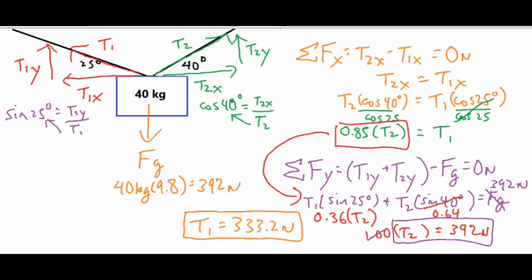To summarize: draw all forces on your diagram, break everything into x and y components, and write the sum of forces equations for each direction. Because we had multiple unknowns, we used a system of equations — solving T1 in terms of T2 from the x-equation (T1 = 0.85T2), then substituting into the y-equation to find T2 = 392 N and T1 = 333.2 N. I hope that was helpful — thank you for watching.